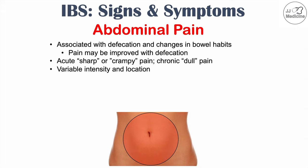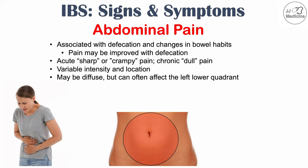This pain is variable in intensity, and the pain can change locations, although it's more often described as diffuse and more common to affect the left lower quadrant. So the left lower quadrant is this area here — the patient's left side and their left lower quadrant. There is no radiation of the pain, so it stays in the abdomen and doesn't radiate to the back, up to the chest, or down the legs.